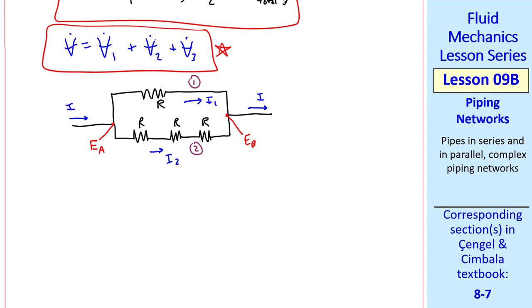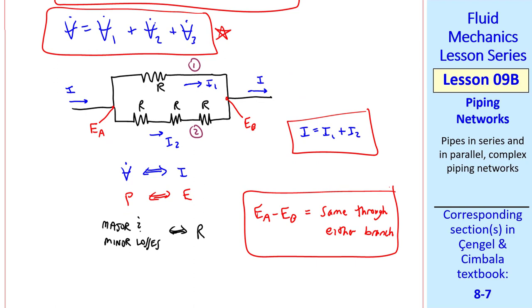The current will split between the two branches, I1 and I2, but I1 plus I2 has to equal I, the total current. The analogy is that V dot, in a fluid flow, is analogous to current. Pressure is analogous to the voltage or the voltage potential, and the major and minor losses are analogous to resistance. I drew only two branches, but you can extend this to three branches and see that these are analogous. And Ea minus Eb is the same through either branch.